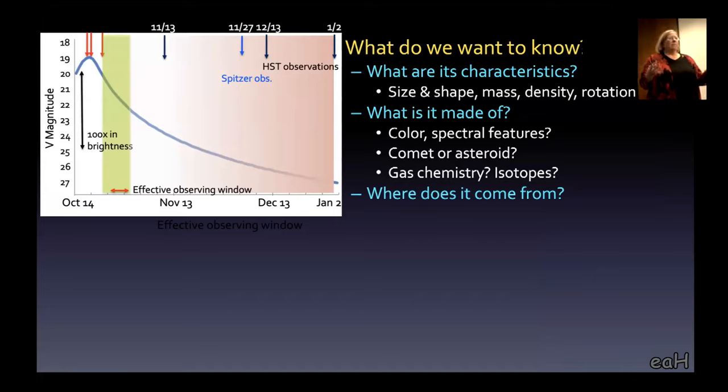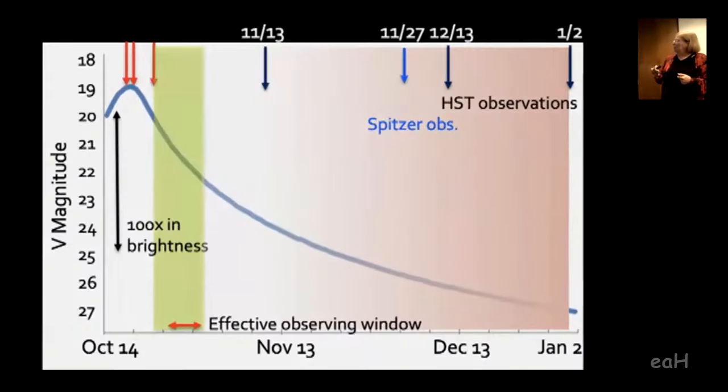Let's explore what we want to know and how we figured it out. It's the first of its kind. So you want to know the basics. How big is it? What is it made of? Is it rotating? What's its size? You also want to know what's the chemistry? What does the surface look like?